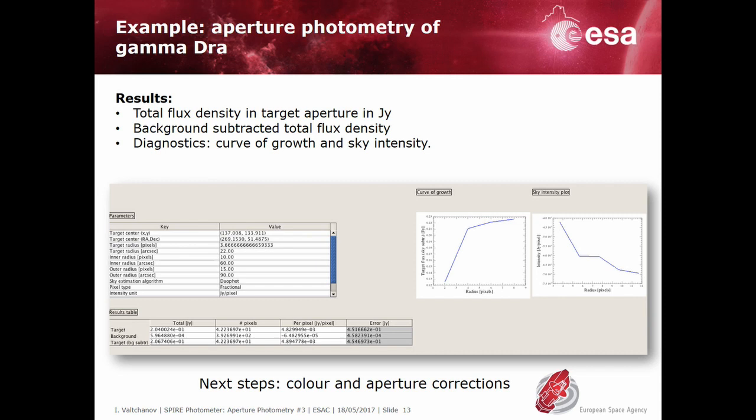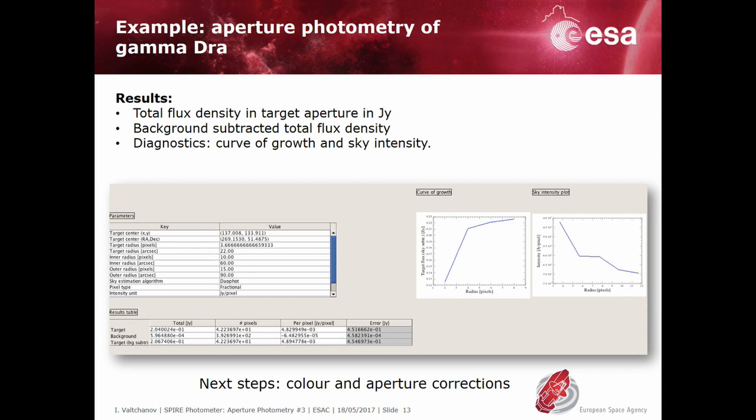Note that the result product contains the measured integrated flux density in the aperture, corrected for the background. The next steps would be to correct for the fraction of the flux outside the aperture and some other corrections which involve knowledge of the actual spectral shape of the source. These further steps are explained in the video tutorial on the color corrections, and this is the end of this video tutorial.